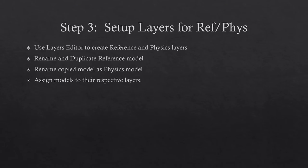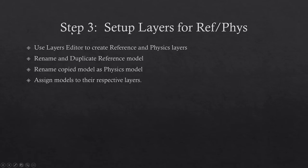Step three is actually setting up layers for the reference and physics models. Reference is what you'll see, and physics is what Gmod uses to actually do physics with. We'll first create the layers in the Layer Editor. We're going to name our model as 'reference,' duplicate it, name that duplicate as 'physics,' and then assign them to their respective layers.